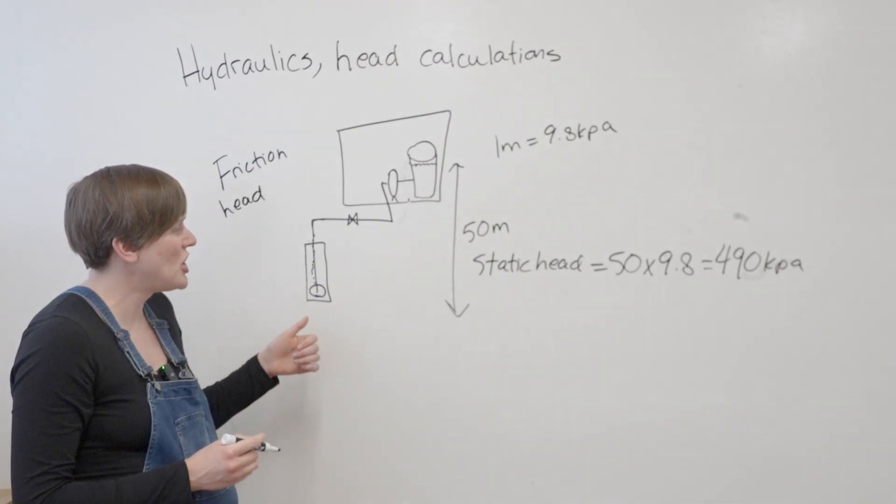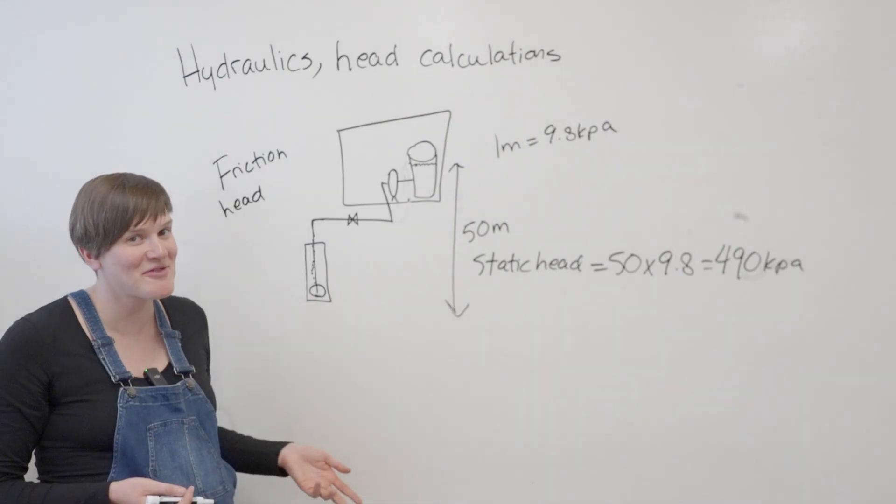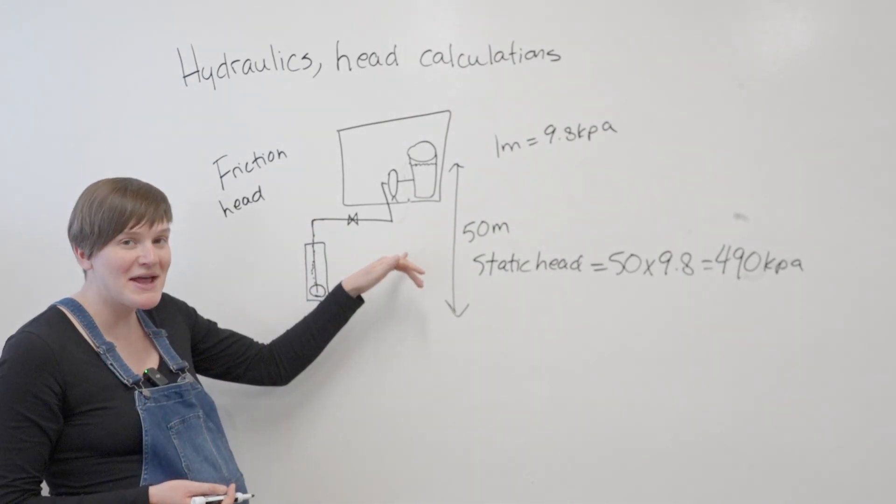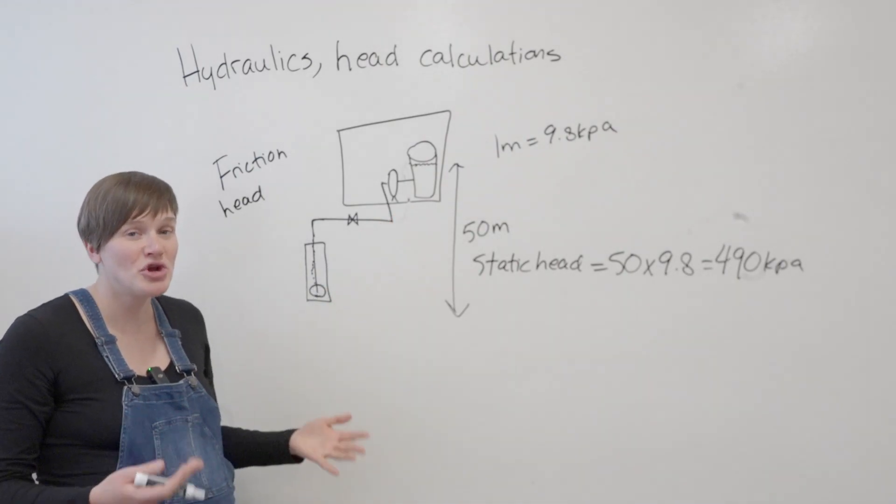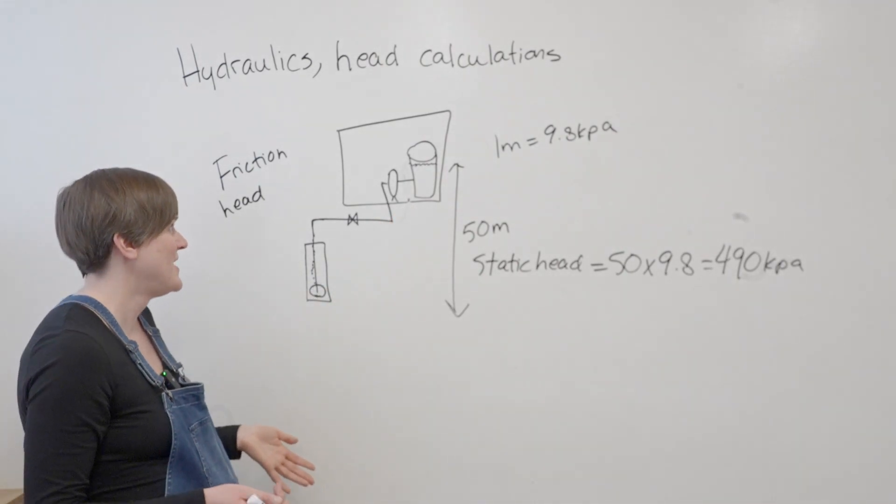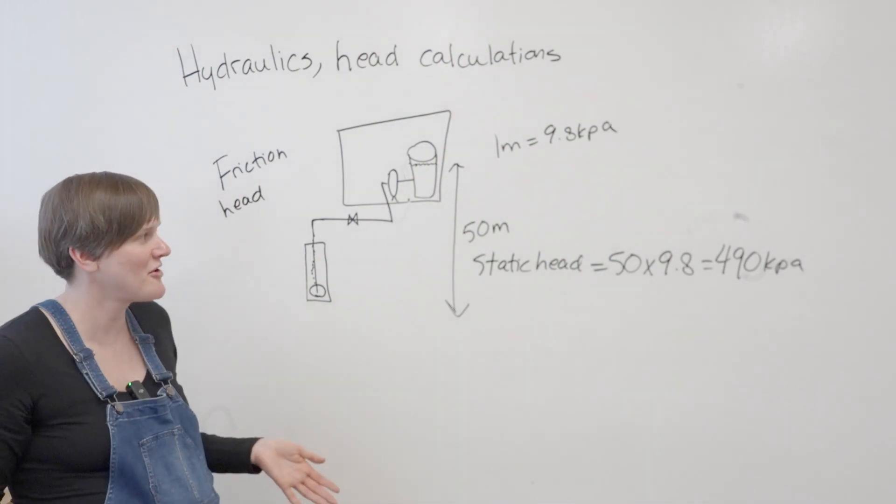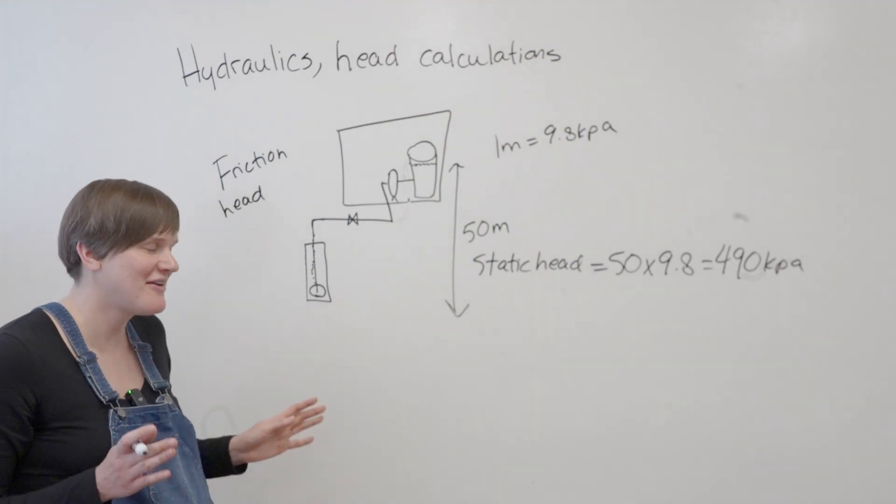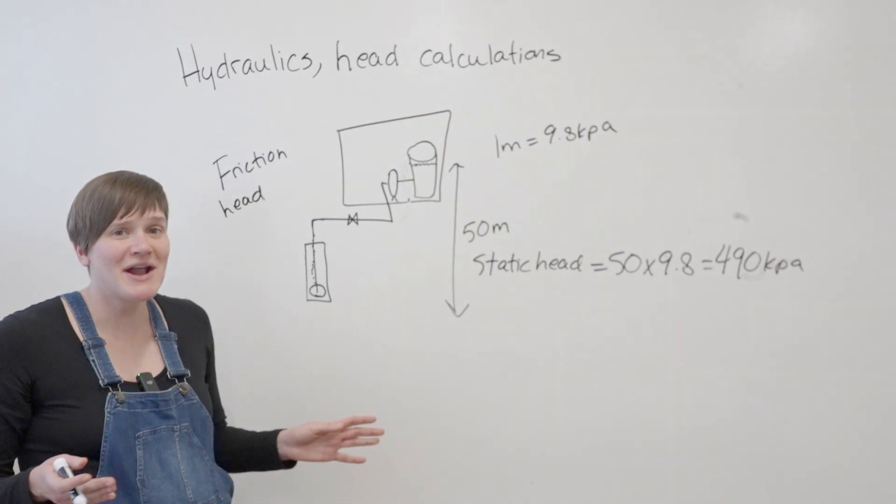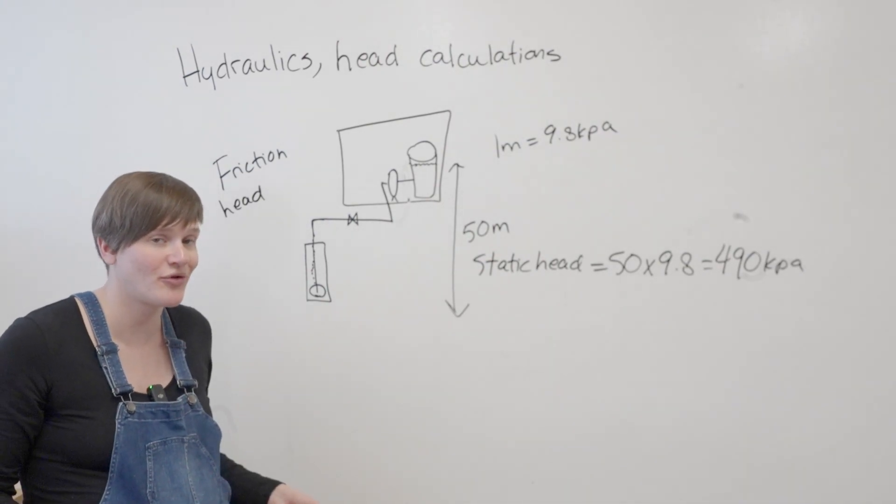So depending on the length of the pipe, the type of the pipe, diameter of the pipe, how many bends, how many T's, how many things like valves and filters, you're going to be able to calculate a friction head. Now that is beyond the scope of a small water system operator for sure and so I'm not going to get into how you calculate the friction head, it's very complicated, but you might have a question where they provide the friction head and then you have to calculate what the total head is.